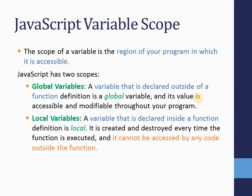A global variable is declared outside of a function, while a local variable is declared inside a function definition. A global variable is accessible and modifiable throughout your program, while a local variable can only be accessed within the function — not from anywhere else. A global variable is created only once, while a local variable is created each time that function is executed.